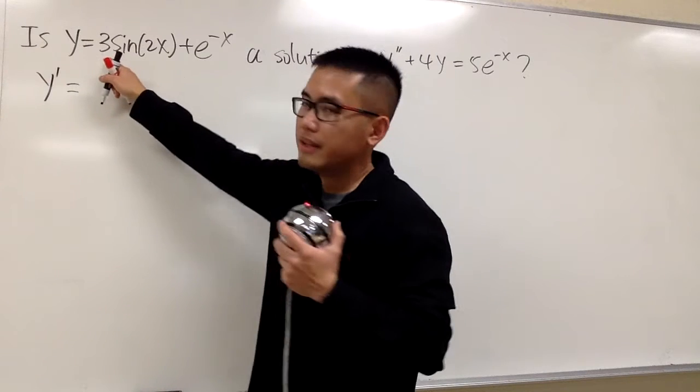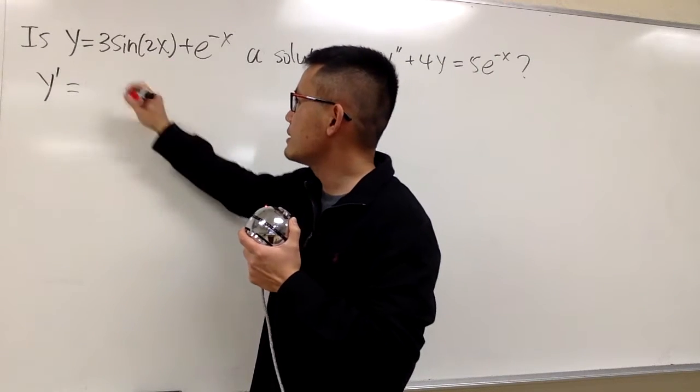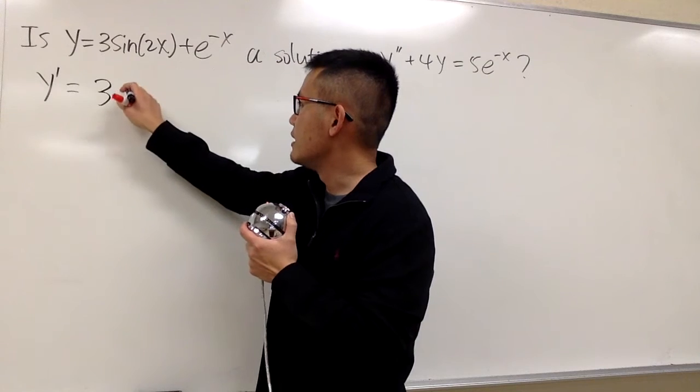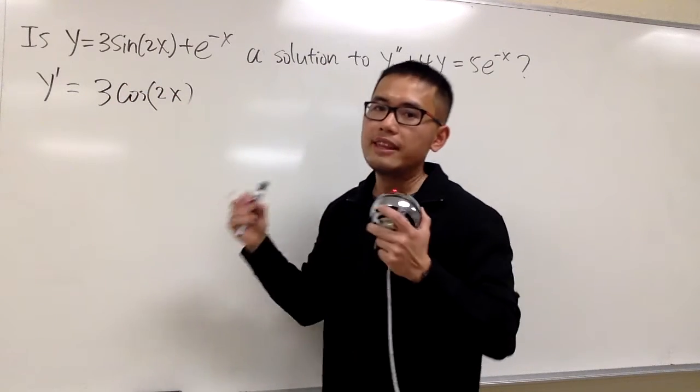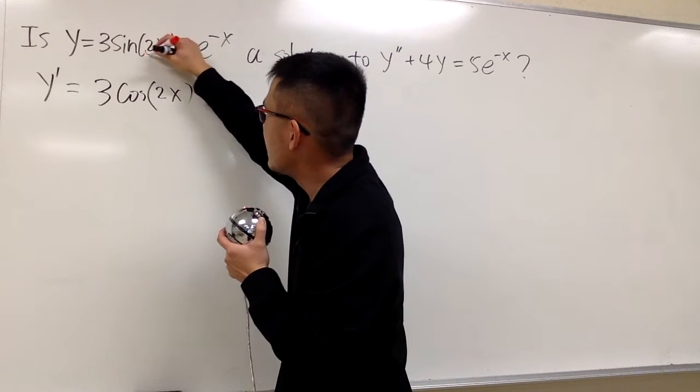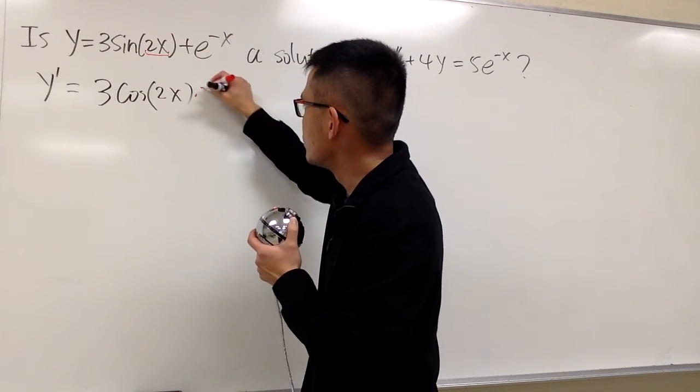This is going to be the derivative of 3 sine 2x. Let me write down the 3, and the derivative of sine is positive cosine. And the 2x stays the same for now. And the chain rule says we have to multiply by the derivative of 2x, which is 2.